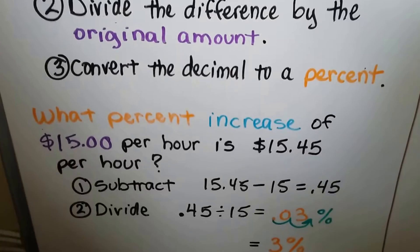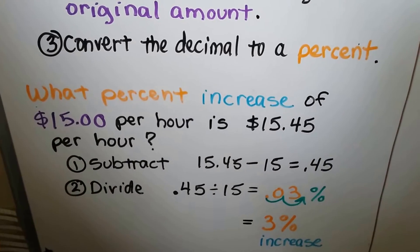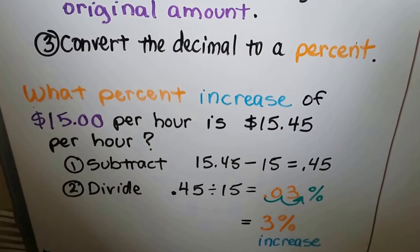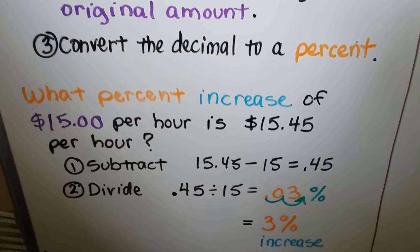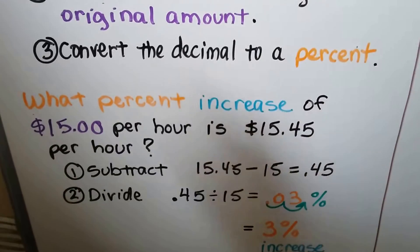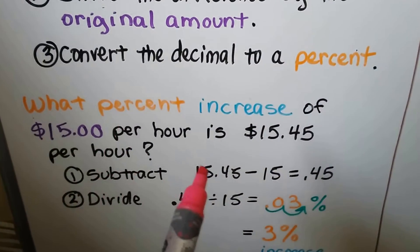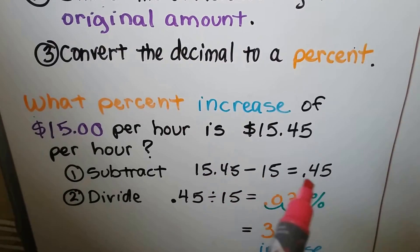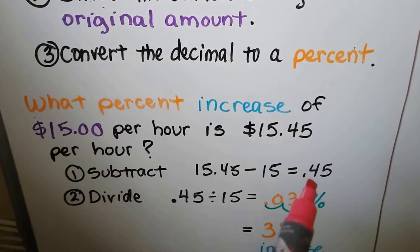What percent increase of $15 per hour is $15.45 per hour? The first thing we do is subtract. We do $15.45 minus $15, and it's just 45 cents — 0.45.